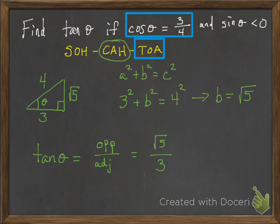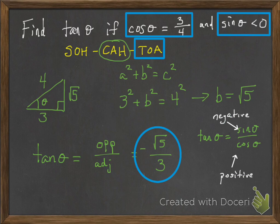But that's not exactly right. So we have this other piece of information that says sine of theta is less than 0. If tangent is sine over cosine, which we know from the previous slide, cosine is positive 3 over 4, and sine is negative, then that means tangent has to be negative. So you just have to change that square root 5 over 3 to negative square root 5 over 3.